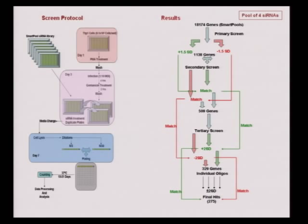After validation — using each of four individual siRNAs per target, with the criteria that a minimum of two siRNAs should give a hit — we could finally identify about 275 host factors that were critical for maintaining survival of the intracellular bacteria.